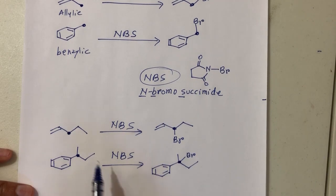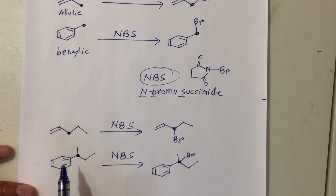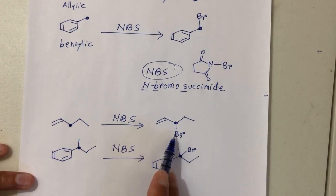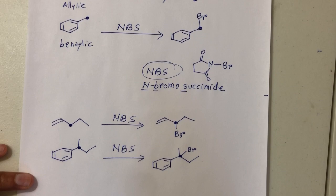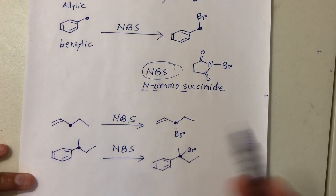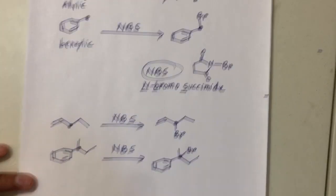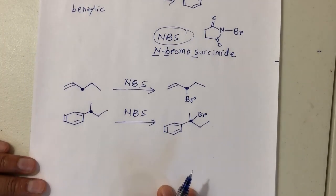Now you probably see why we're learning this. During this process, you put a bromine on your carbon, and the moment you have a bromine, you're thinking about a leaving group. This opens up new doors for substitution and elimination reactions — that's why we need to learn this reaction.